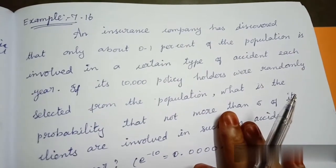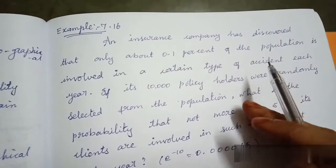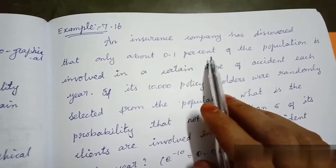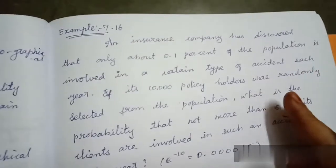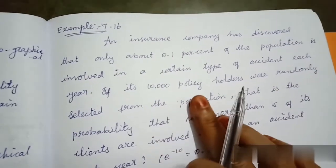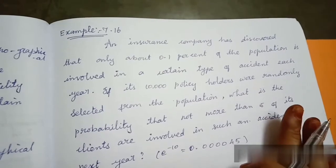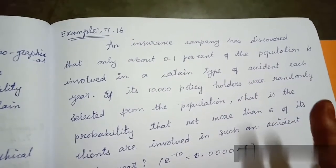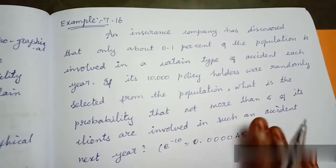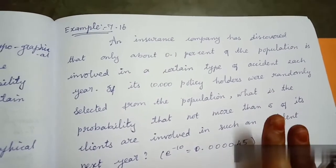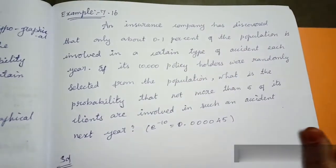So, this is an insurance policy problem. The insurance company gives a value of 0.1% per year — that is, 0.1% of the population is involved in accidents. We have 10,000 policy holders randomly selected from the population, and we need to find the probability that not more than 5 of its clients are involved in such an accident.